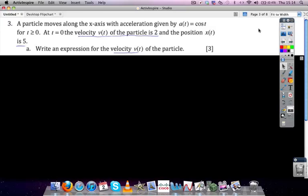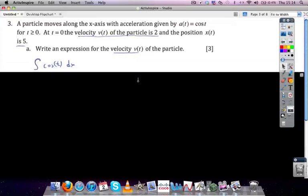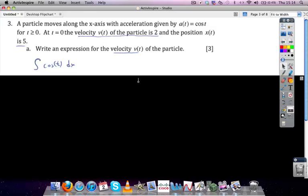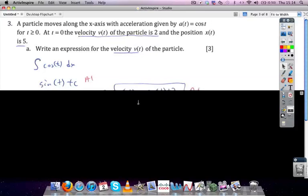So we need to write an expression for the velocity of the particle. We know the relationship between acceleration and velocity, which gives us the integral of the acceleration is the velocity. The acceleration is cos of t, so we integrate that, which we know is sine of t plus the constant of integration. That's our first point.